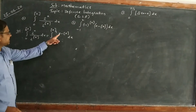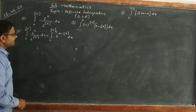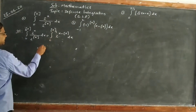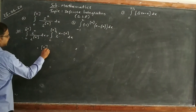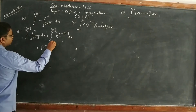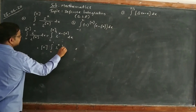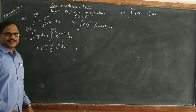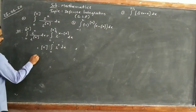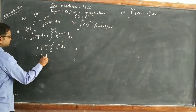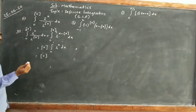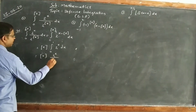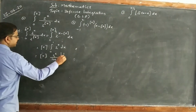Since x minus [x] is a periodic function with period 1, as I told you earlier, I can write this as [x] times the integral from 0 to 1 of 2^x dx. The integration of a^x is a^x divided by log a, with limits 1 and 0.